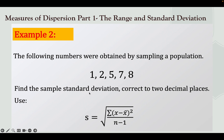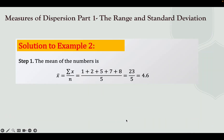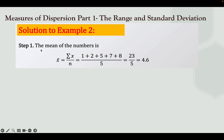Find the sample standard deviation correct to 2 decimal places. We use the formula: s equals the square root of the summation of squared deviations over n minus 1. Step 1: find the mean. We have 1 + 2 + 5 + 7 + 8 = 23, divided by 5 total data values, giving a mean of 4.6.